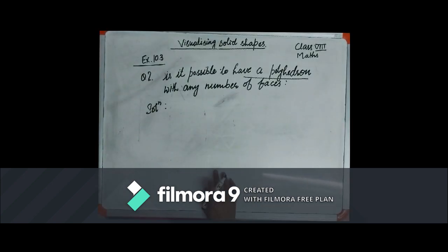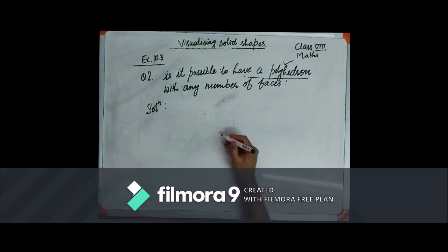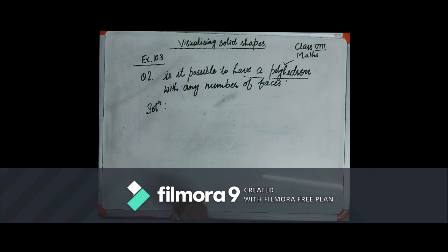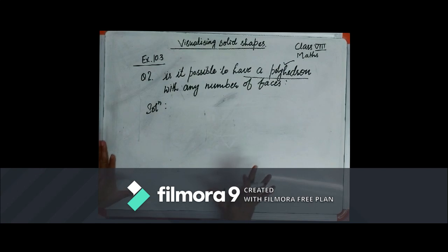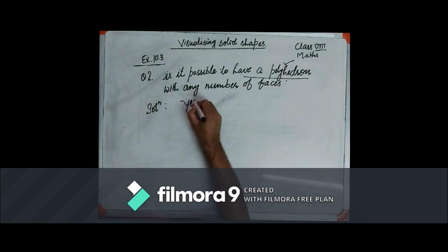Question number two: is it possible to have a polyhedron with any number of faces? I have told you earlier that if we want to create any polyhedron, then a minimum of four faces are required to get a closed 3D shape. So whenever we have four or more polygons, we can create a polyhedron.